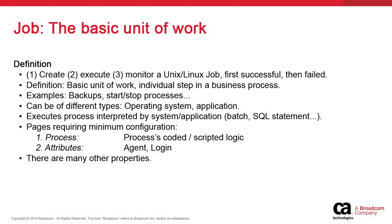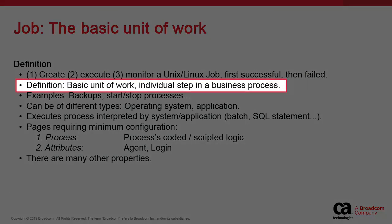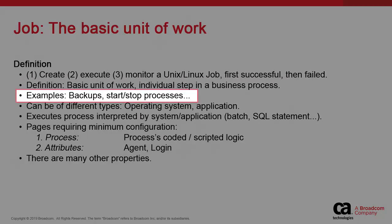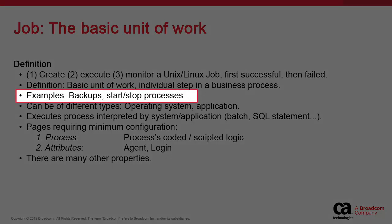The jobs object is the basic building block of automation. It defines the what, where, and who — what will execute, where, and under whose credentials. It is a unit of work that sometimes executes alone but more generally as part of a business process, which we model using the workflow object. The workflow object is therefore a series of jobs executing in sequence.